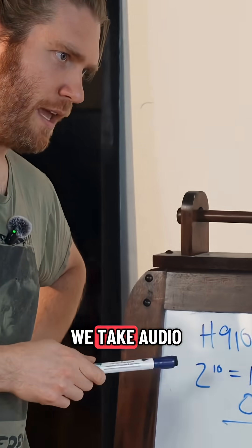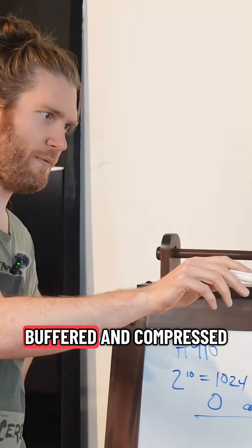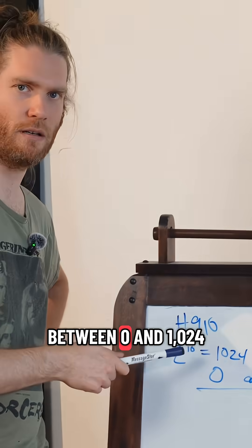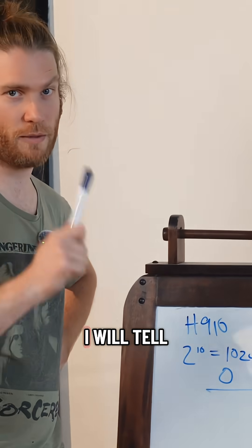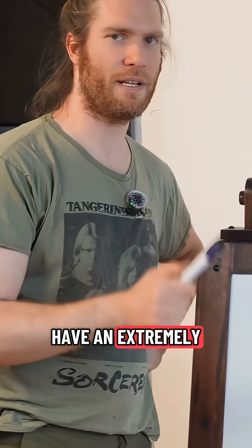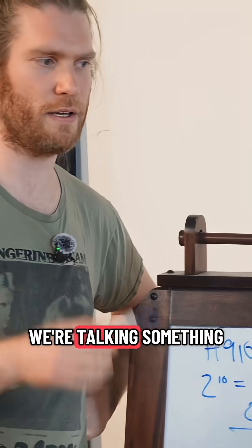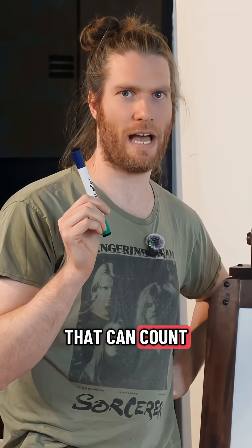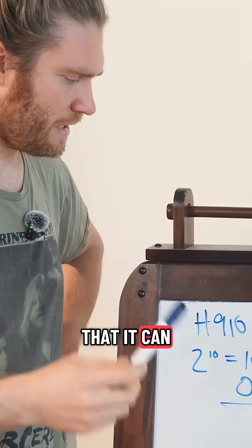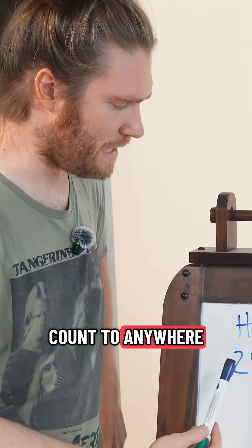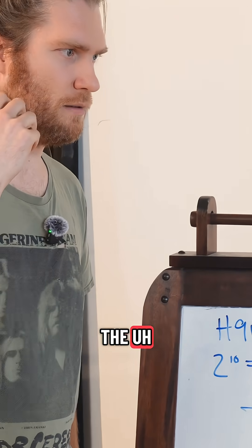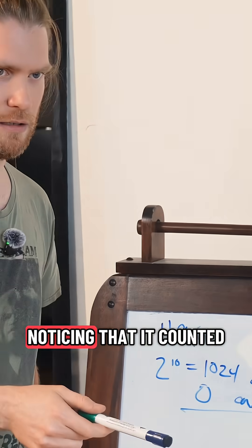So how do we take audio that we have buffered and compressed and turn it into a number between 0 and 1,024? First and foremost, we need to have an extremely fast clock — something that can count so incredibly fast that it can count to anywhere between 0 and 1,024 without the listener even noticing that it counted.